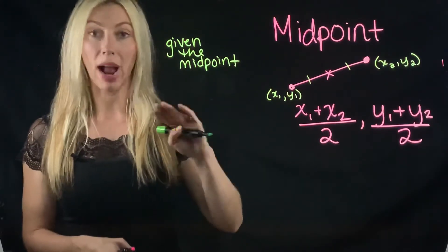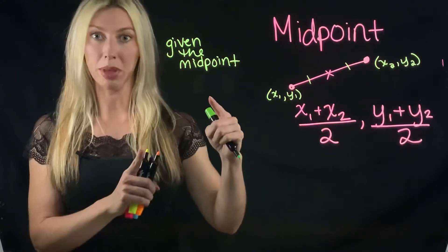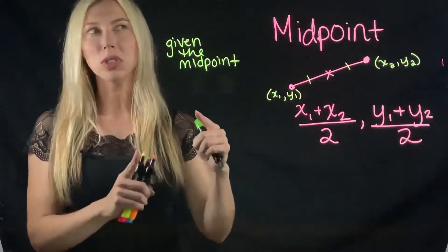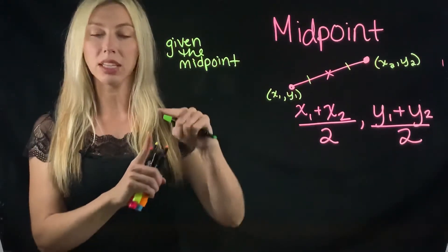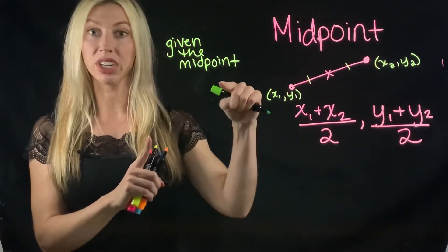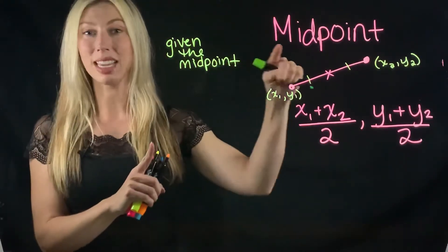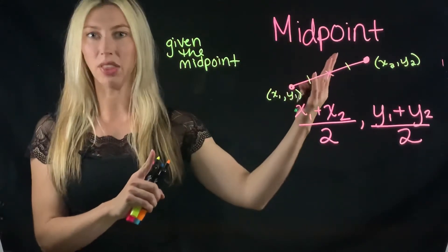You can pretty much graph your endpoint and your midpoint and use kind of like a slope formula to count how much up and over it is to get to the midpoint and then just count that same distance up and over to get to the other endpoint.